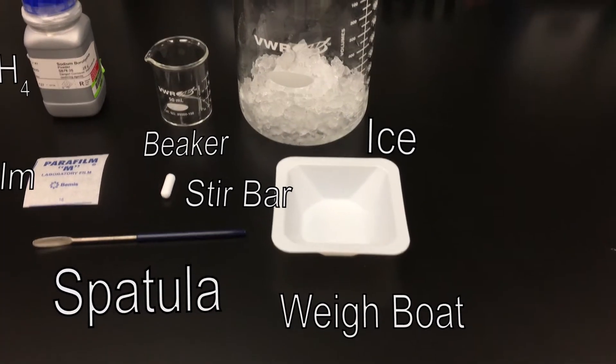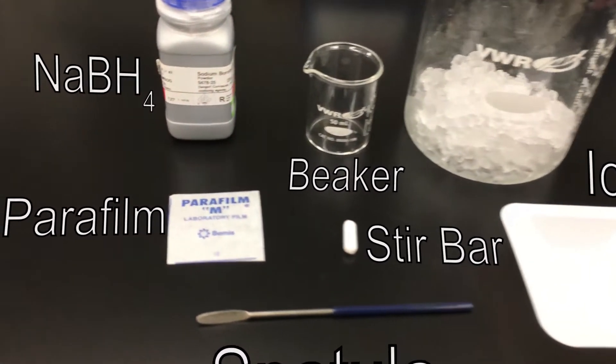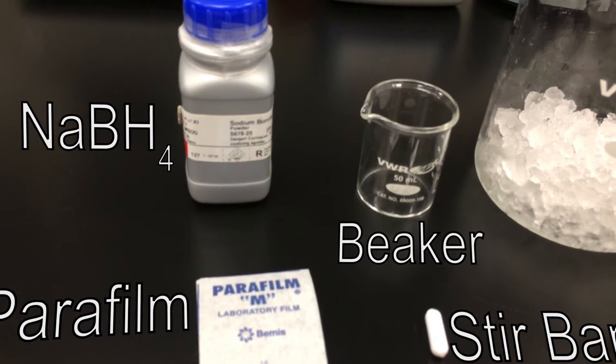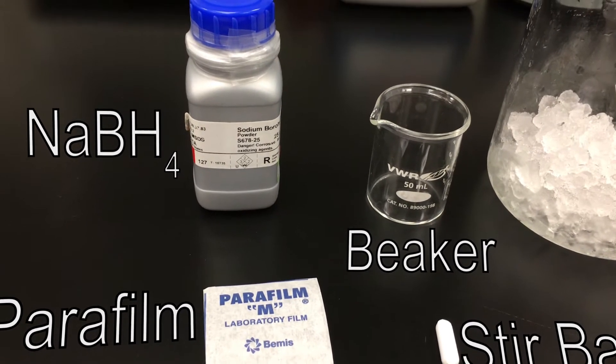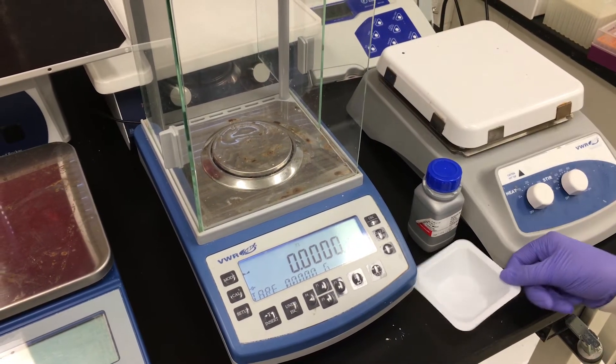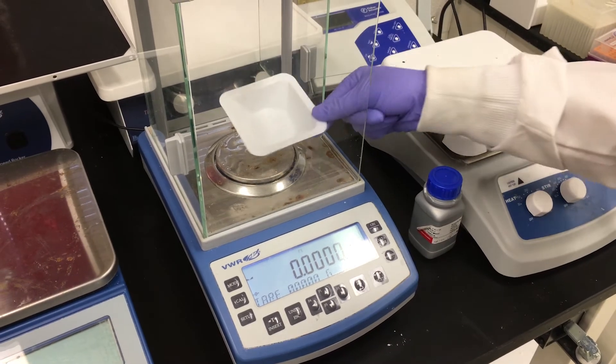Next, we will make our sodium borohydride solution to act as our reducing agent. Begin by taring your balance using your weigh boat.